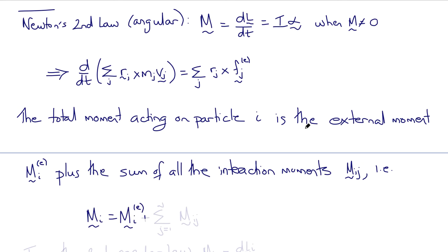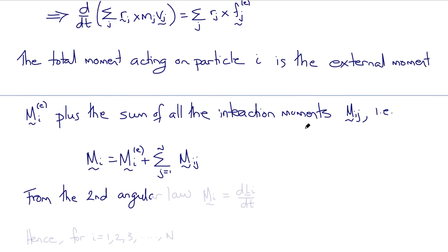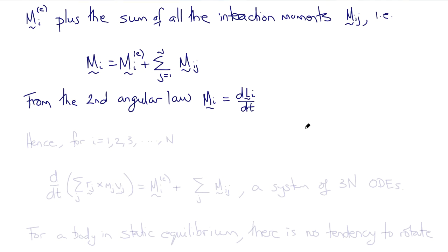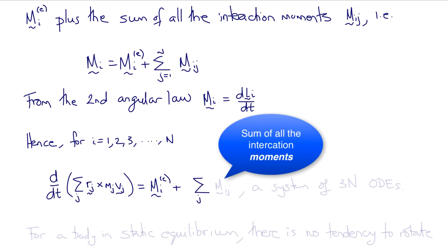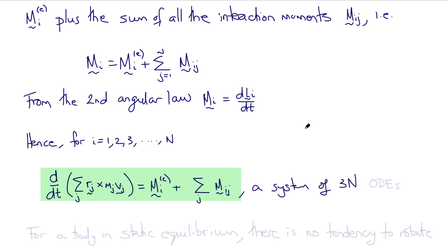Therefore, the moment acting on particle i is MᵢE, the external moment, plus the sum of the interaction moments from j equals one to N of Mᵢⱼ. From the second angular law, Mᵢ must equal dLᵢ/dt, and hence for all particles in the system i equals one to N, we can write that d/dt of the sum from j equals one to N of Rⱼ crossed with the linear momentum mⱼvⱼ equals the sum of external moments plus the sum of all interaction moments. This is therefore a system of three times N ordinary differential equations.